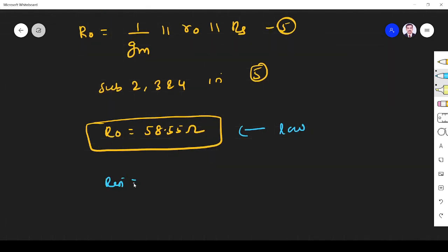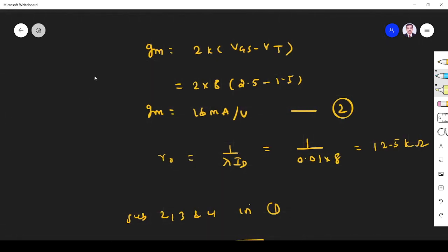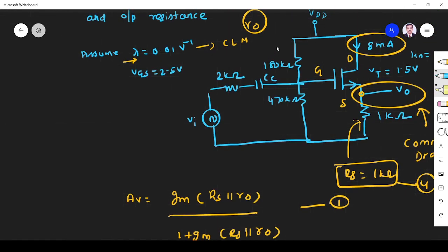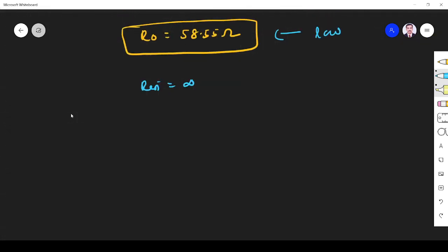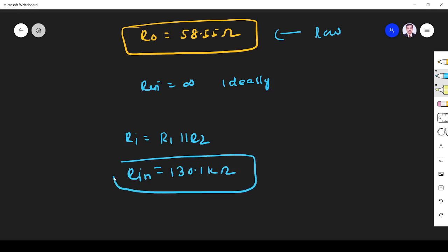By input resistance they didn't ask that. The input resistance is infinity, so ideally it is infinity for common drain amplifier, but here we have biasing resistors R1 and R2. You see this is R1 190k, this R2 470k. Though they didn't ask, I'll do that. Ideally it is infinity for common drain amplifier, very very high, but practically we have bias resistors. They will introduce a finite impedance that is R1 parallel R2. So if you take R1 parallel R2 it will be 130.1k, that is this input impedance.